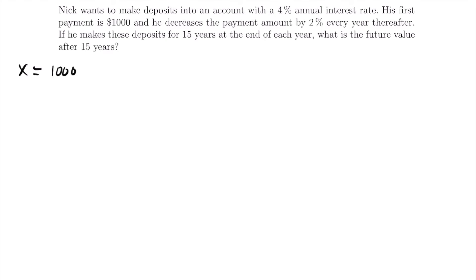Let's write down everything we know. The first payment is $1,000, so X equals $1,000. The account has a 4% annual interest rate, so I equals 0.04. The payments are made yearly, matching the annual compounding, so no conversion is needed. He makes deposits for 15 years, so N equals 15. He decreases the payment by 2% each year, so the inflation rate R is equal to negative 0.02.